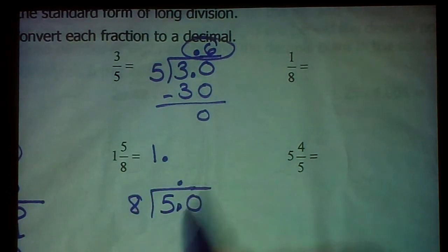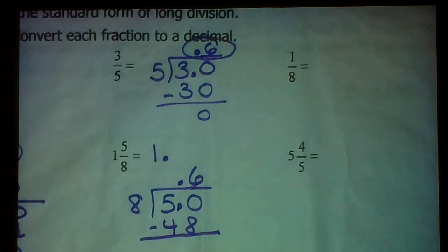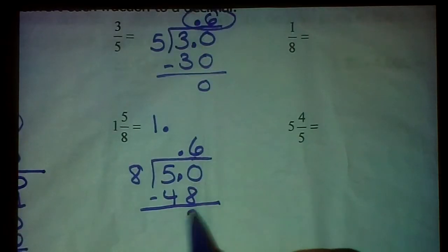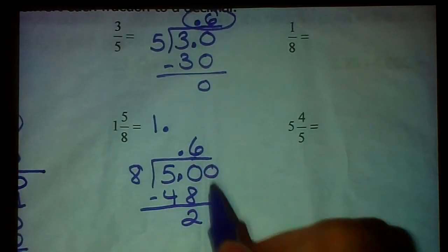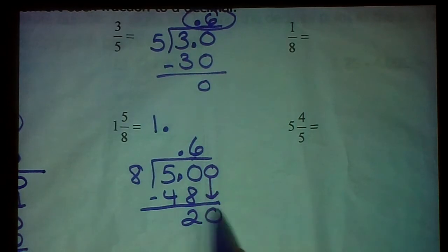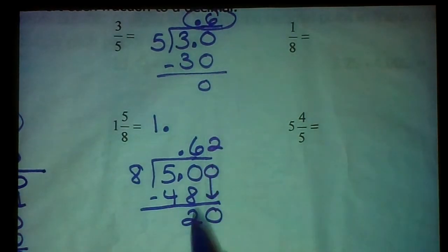8 goes into 50 six times. 6 times 8 is 48. 50 minus 48 is 2. I've got to add a 0 because I need a 0 remainder. 8 goes into 20 twice. 8 times 2 is 16. I'm not done yet.